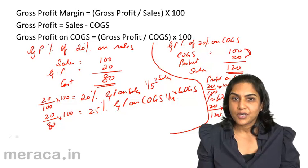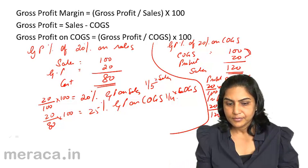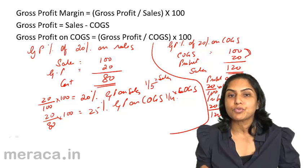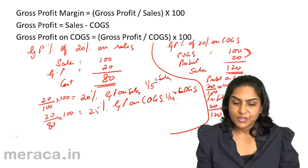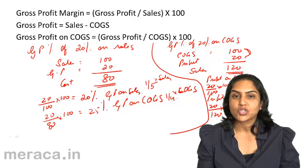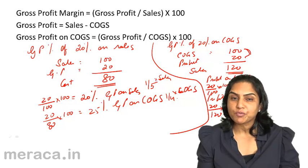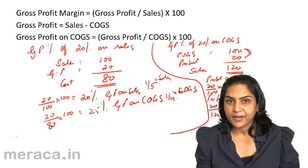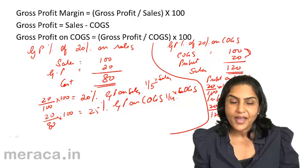This conversion is extremely useful in computing several problems under this topic. If nothing is mentioned, a gross profit margin is assumed to be on sales, because normally we express gross profit margin as a percentage of sales. However, we could also express gross profit as a percentage of cost of goods sold. If GP margin is given on sales, assume sales to be 100; if given on cost of goods sold, assume cost of goods sold to be 100.